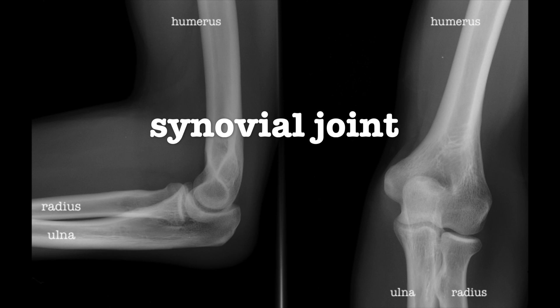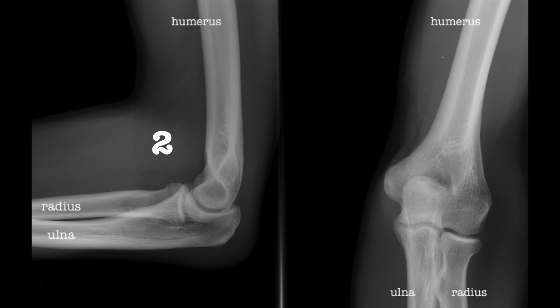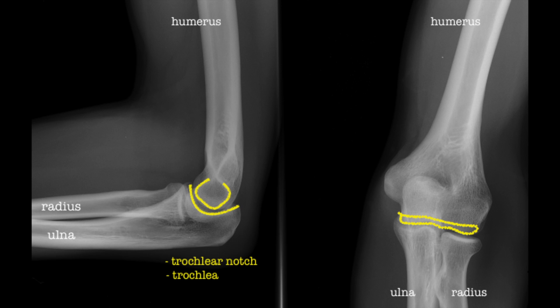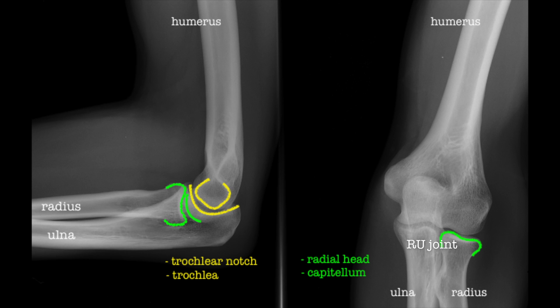The elbow is a synovial joint, more specifically a hinge joint. It consists of two articulations: the trochlear notch of the ulna and the trochlea of the humerus, and secondly the head of the radius and the capitulum of the humerus. Another articulation to also keep in mind is the one that exists between the proximal radius and the ulna — the radial-ulnar joint.